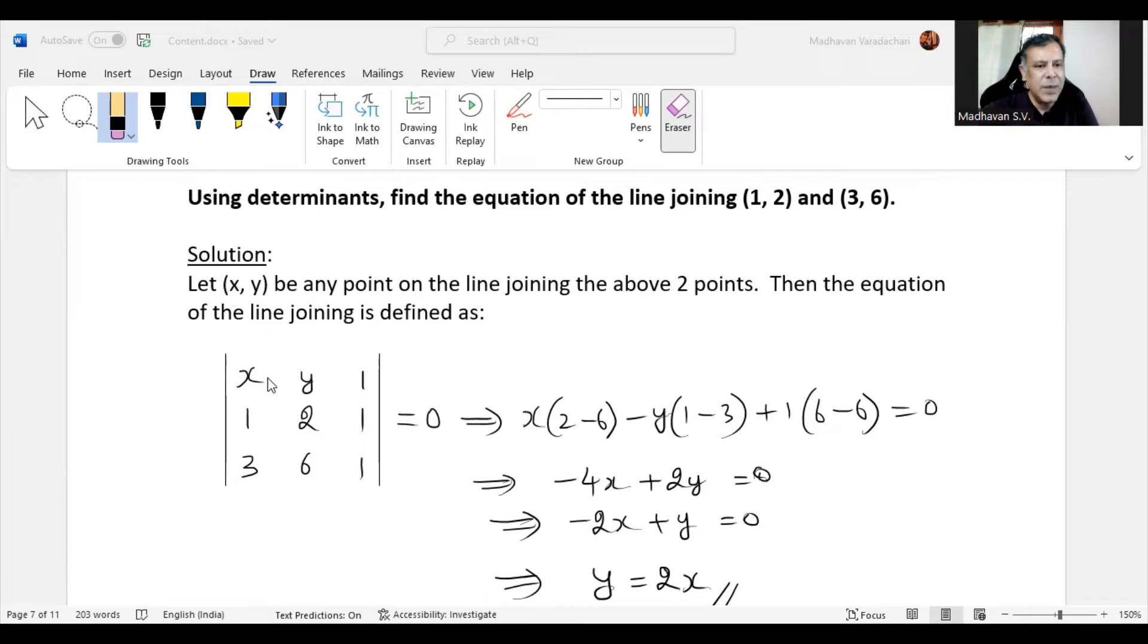So first we will write this x, y in the first row and then subsequent points in the second row and third row. Last column is as usual 1, 1, 1 and then we will equate this determinant to 0